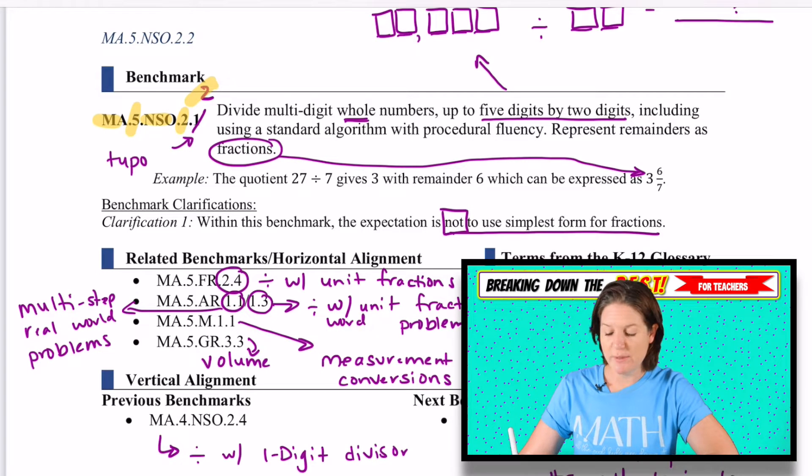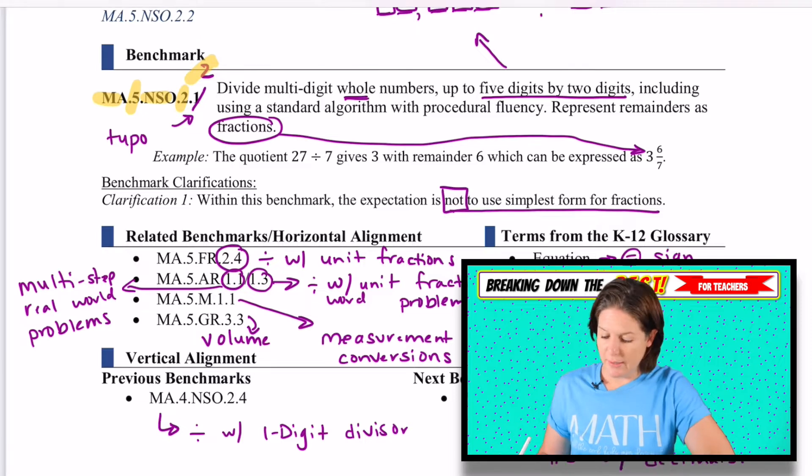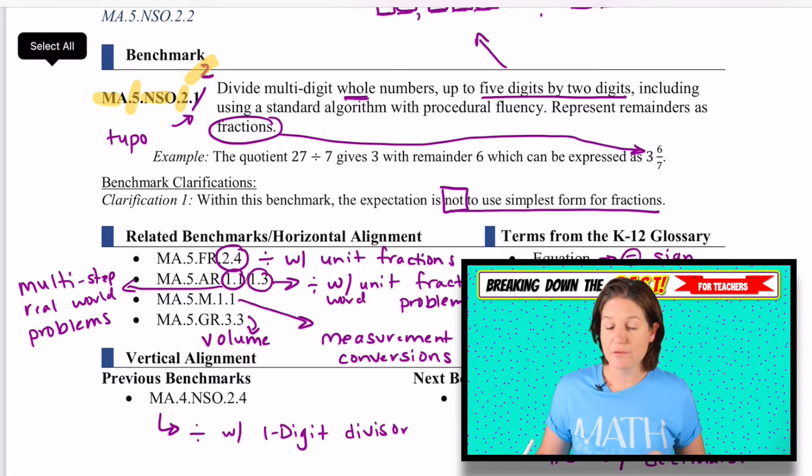So just know that there was a typo there. I'm sure that they will catch it because they're constantly updating it. By the way, MA stands for math. 5 stands for fifth grade. NSO stands for the number sense and operations. And then the 2.2 is the standard that we're working on today.